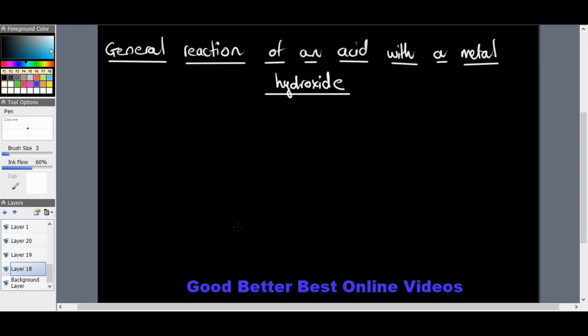Okay, so when a metal reacts with water, let's put this down as a first point. When a metal reacts with water, the outcome or the product is what's known as a metal hydroxide.